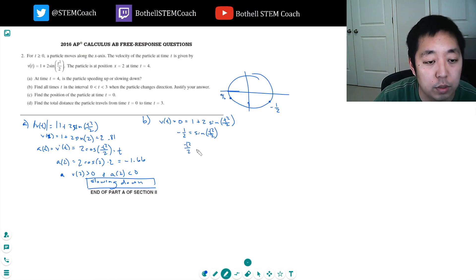This would be a pi over 6 away from here. So 7 pi over 6, so I got t squared over 2 could equal 7 pi over 6. Or t squared over 2 could equal 11 pi over 6. Because this is a pi over 6 away from 2 pi.